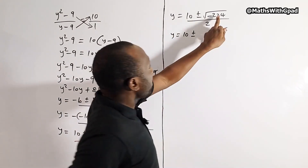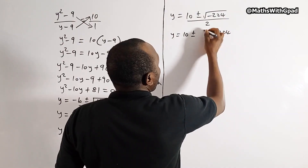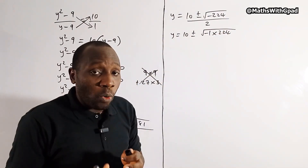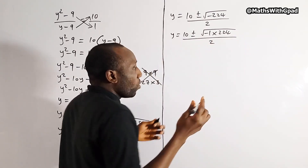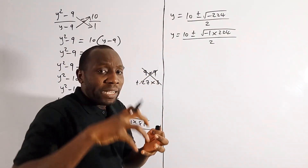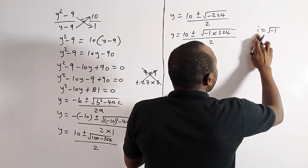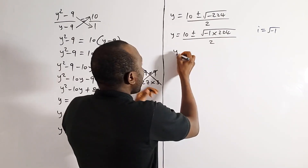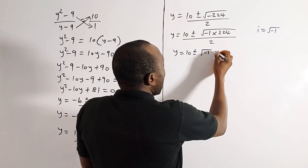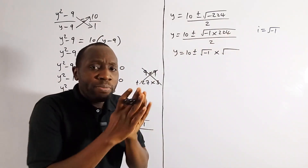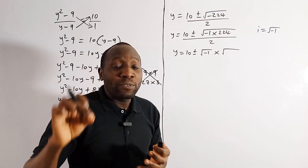We rewrite the square root of negative 224 as the square root of negative 1 times 224. The imaginary unit i is defined as the square root of negative 1. So we replace that with i. Now we factor 224 into two factors where one is a perfect square: 224 equals 16 times 14, and 16 is a perfect square.